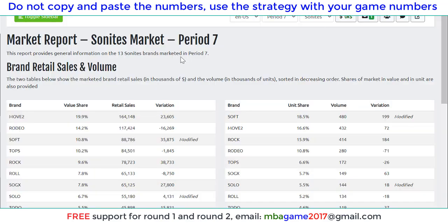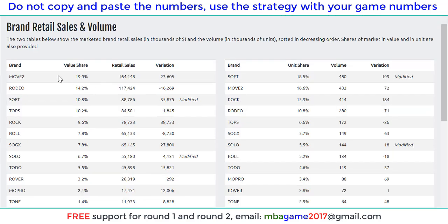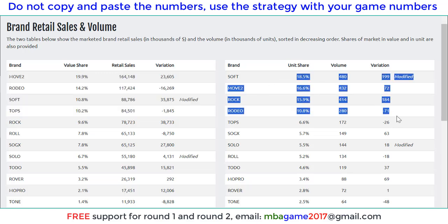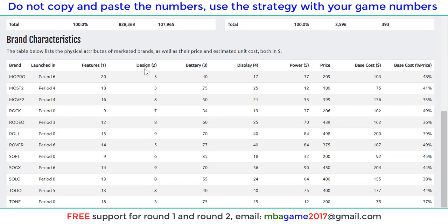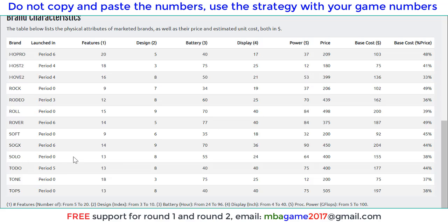First, you see on the screen is a market report. In the market report, we can see the sales of each product here and also the number you need results here. But more importantly, we can see the brand characteristics of competitors. We see the price of competitors and also we see the details of competitors.